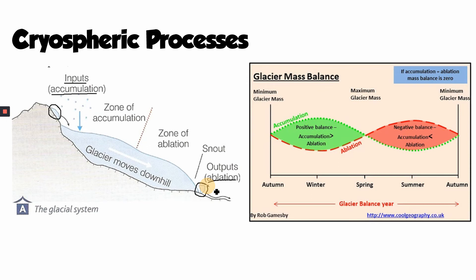Over the course of the year, different processes are dominant at different times. In autumn and winter, accumulation — the addition of snow — is higher than ablation, because cold temperatures mean less melting and more snowfall, so the glacier is filling up, growing thicker. In spring and summer, the opposite is true — ablation is higher than the addition of new snowfall because it's less likely to snow in summer and warmer temperatures mean more melting.